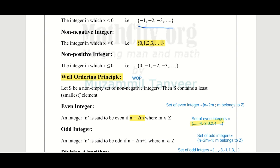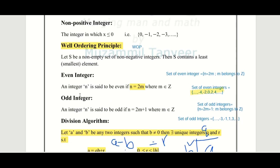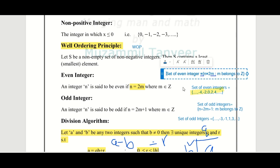Then S always contains a smallest element — meaning there will always be a smallest element in the set. Regarding even integers: an integer n is said to be even if n equals 2m where m belongs to the set of integers. This defines the set of even integers as a subset of the integers.